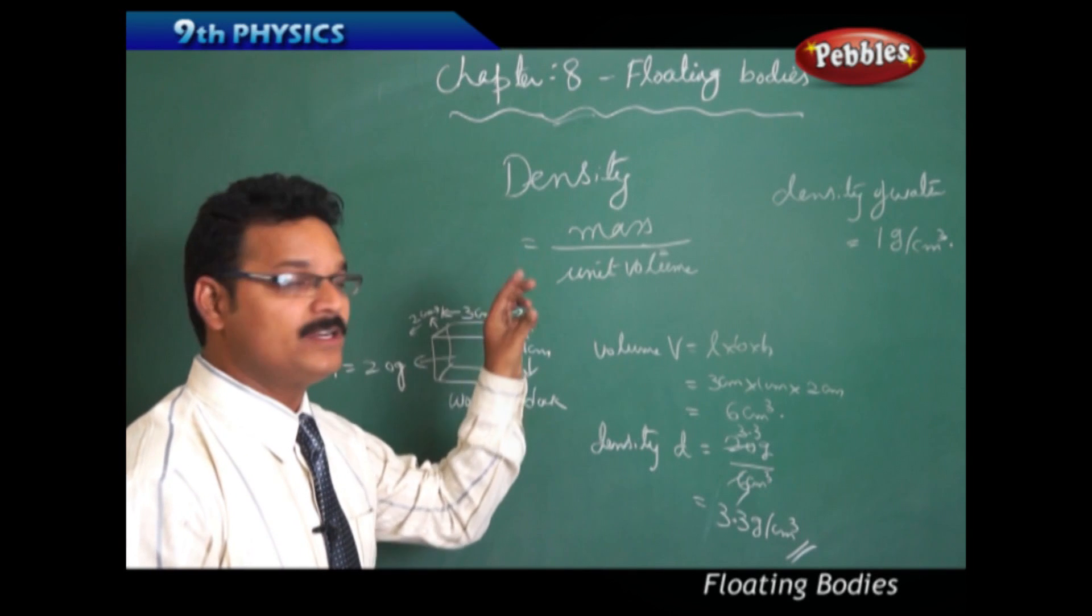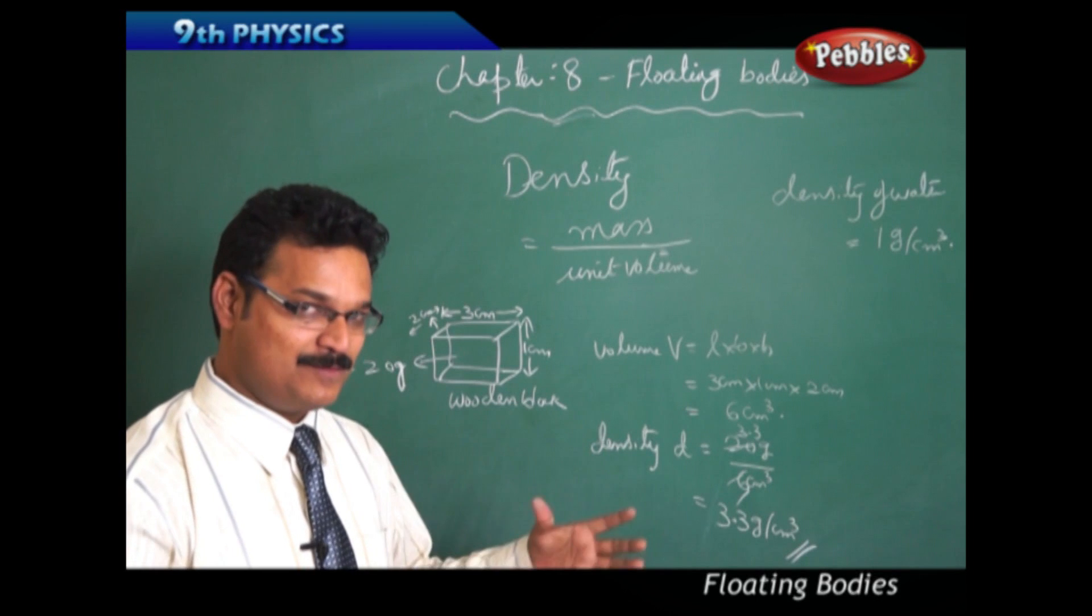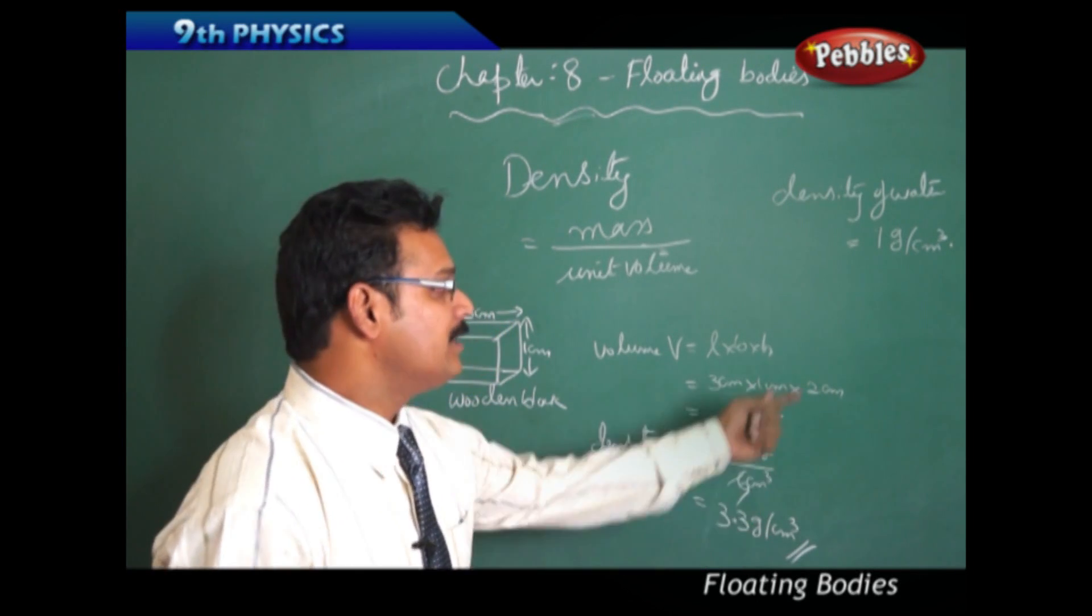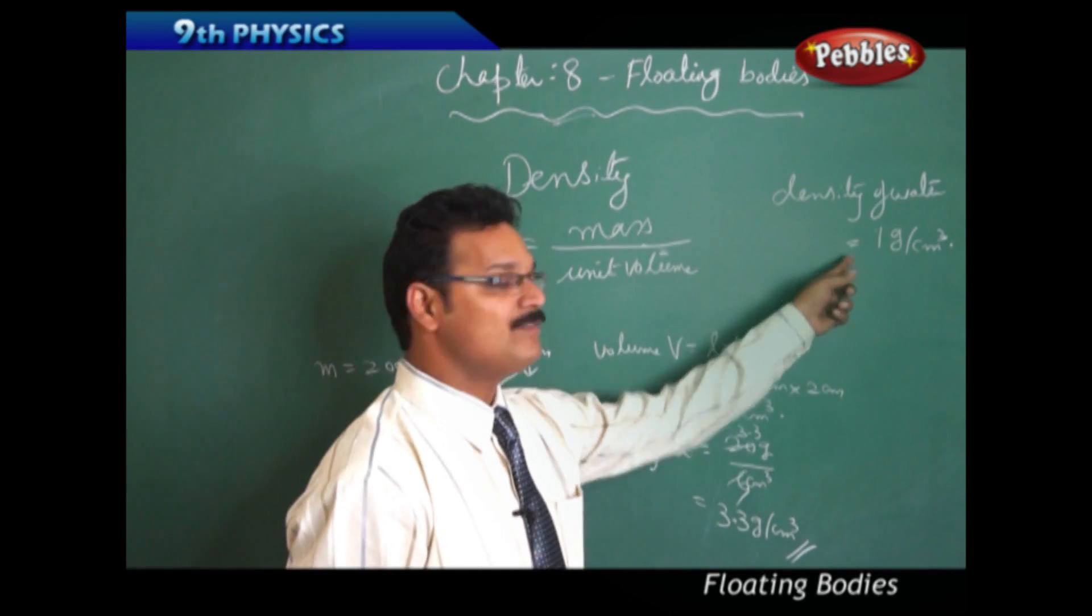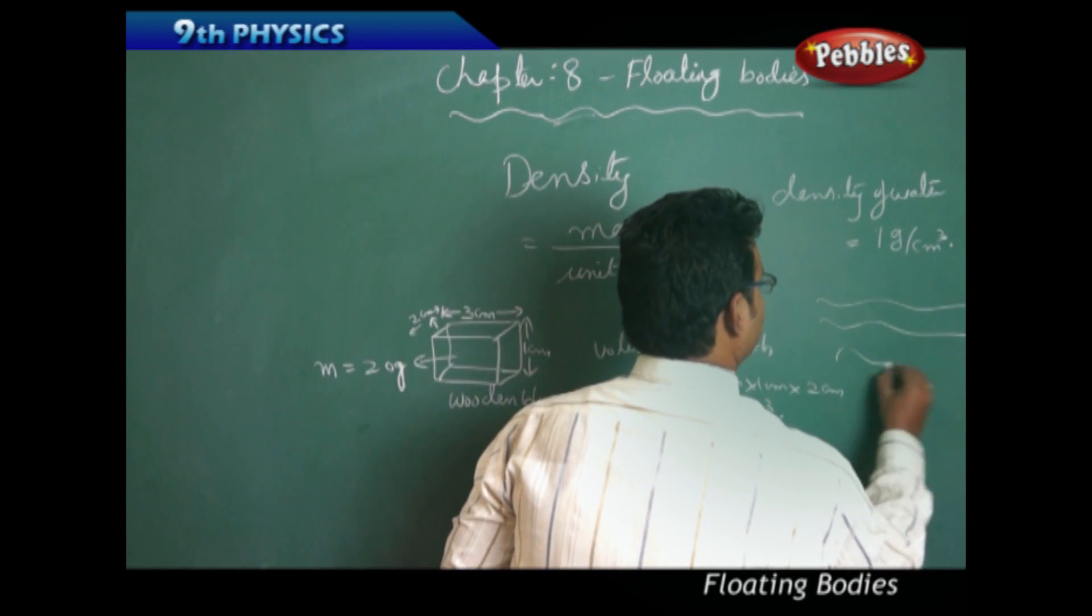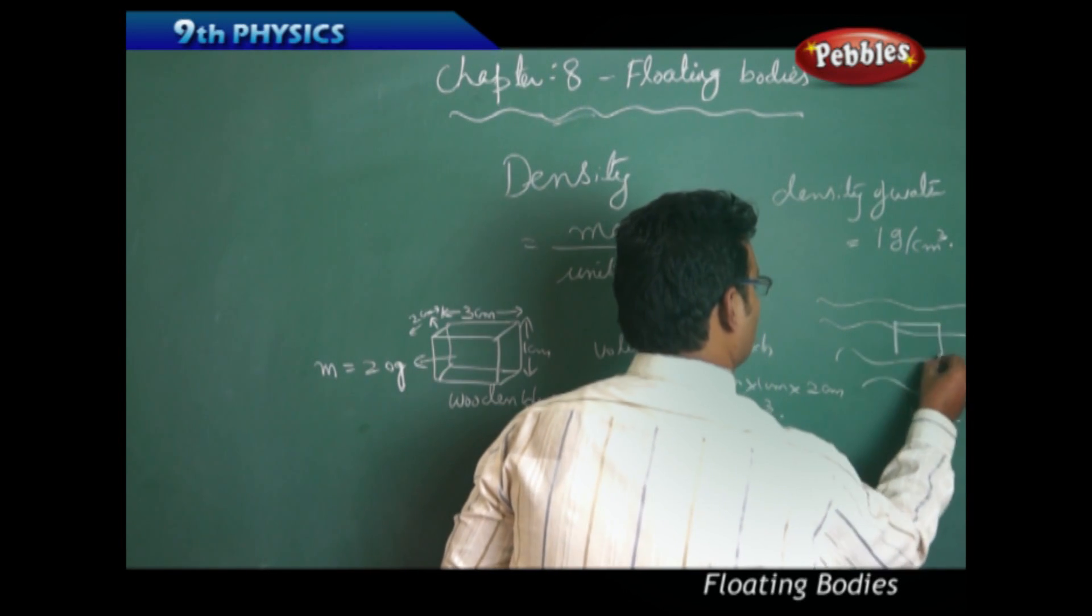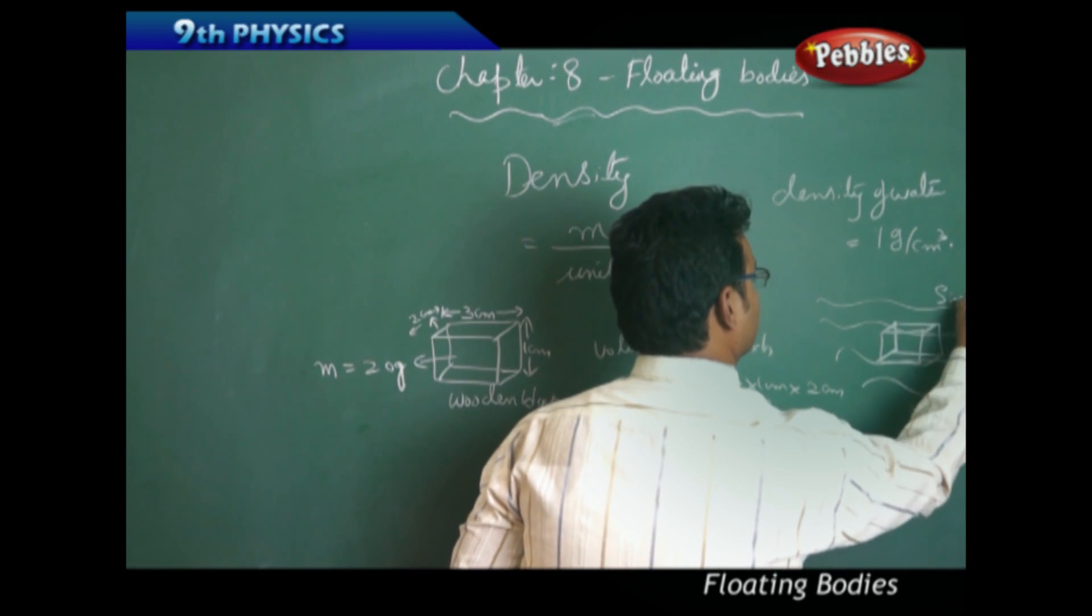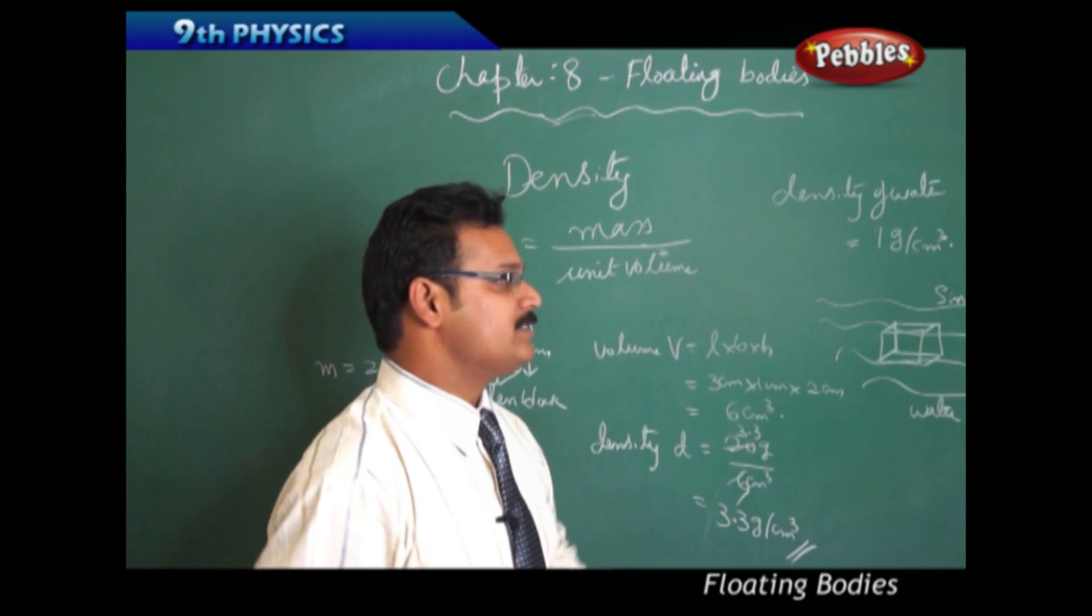Now see this wooden block. If this wooden block is dropped in the water, whether it sinks or floats is very simple. The density of the wooden block is 3.3 gram per centimeter cube, density of water is 1 gram per centimeter cube. As the density of the wooden block is more than density of water, obviously the block sinks. It sinks because the block density is more than density of water.